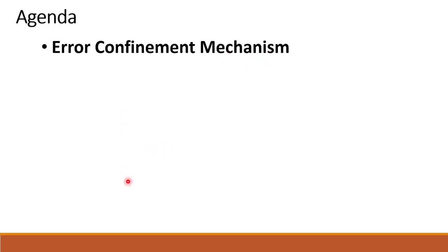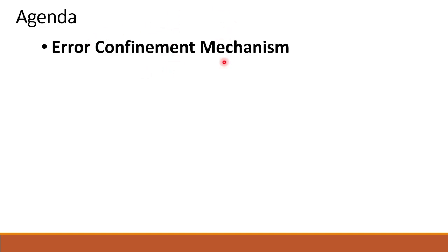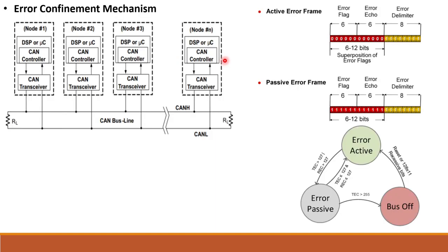For example, we have one CAN network with many CAN nodes connected. If one of the nodes is continuously sending error frames and meets a particular threshold, it should be disconnected from the network using the error confinement mechanism. That defective node should be disconnected from the existing nodes. This is one of the key features implemented in the CAN protocol.